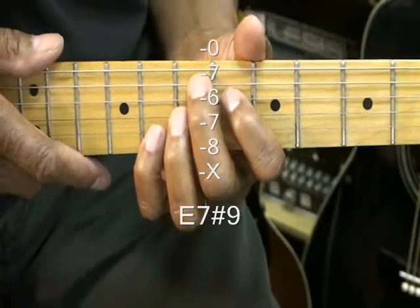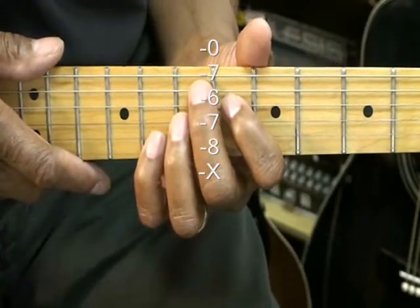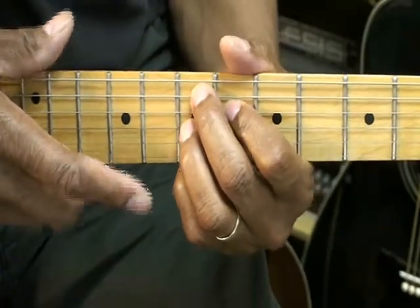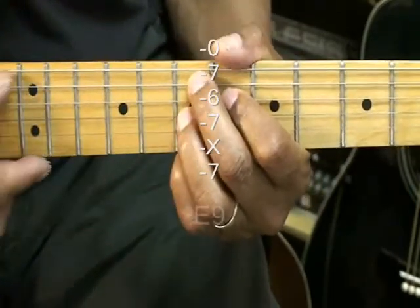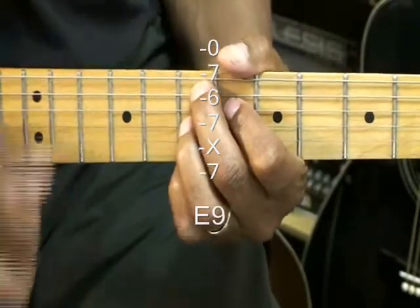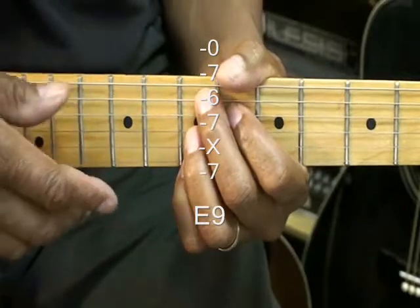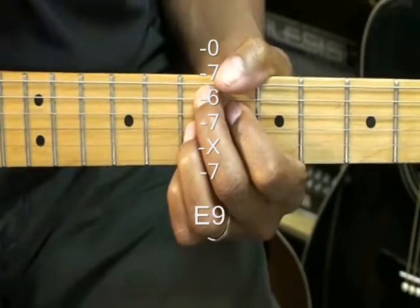Now we're going to do an E9 simply by taking the pinky and putting it on the high E string at the 7th fret. Everything else stays the way it was. And now we've got an E9 chord.